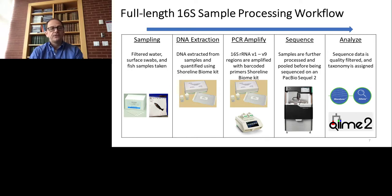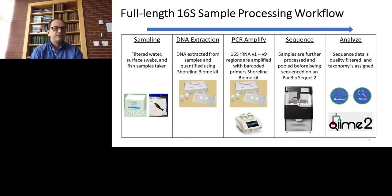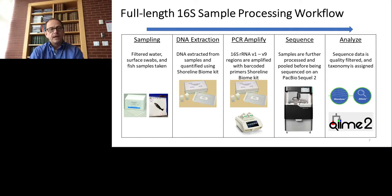We also use full-length 16S rRNA sample processing. For this, we use either samples from fish or swabs, and we use a commercially available kit from a company called Shoreline Biome, a startup in Connecticut. We use their DNA extraction kit, and after that, we use the PCR amplification kit for the V1 through V9 region of the 16S rRNA. We then sequence it on a Sequel II from PacBio, which gives us a lot more throughput. We then use the company's analysis program, SB Analyzer, and their database Athena, before switching over to DADA2 and QIIME2 for subsequent data analysis.